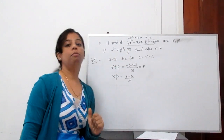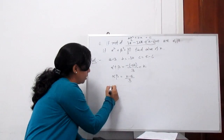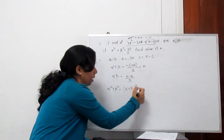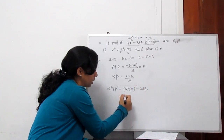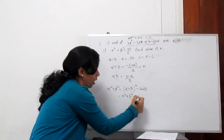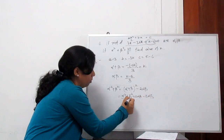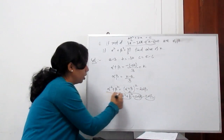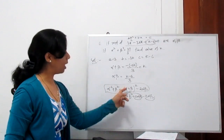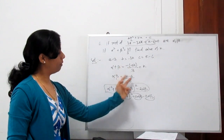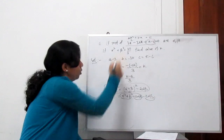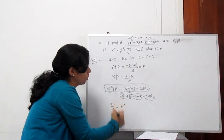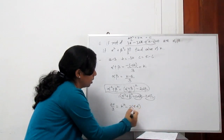They have given that alpha² plus beta² equals 20 by 3. We use the identity: alpha² plus beta² equals (alpha plus beta)² minus 2 alpha beta. This is because (alpha plus beta)² expands to alpha² plus beta² plus 2 alpha beta, and subtracting 2 alpha beta gives alpha² plus beta². Substituting: 20 by 3 equals k² minus 2 times (k minus 6) by 3.